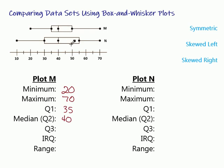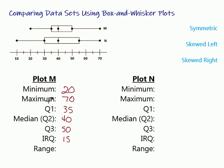Then the third quartile, Q3, puts us right over here at 50. And then IQR — IQR stands for the interquartile range. This is the length of the box. The box goes from 35 to 50, so 50 minus 35 gives us an IQR of 15. And then the range — the overall biggest minus the smallest — we have 70 and 20, subtract and we get 50.